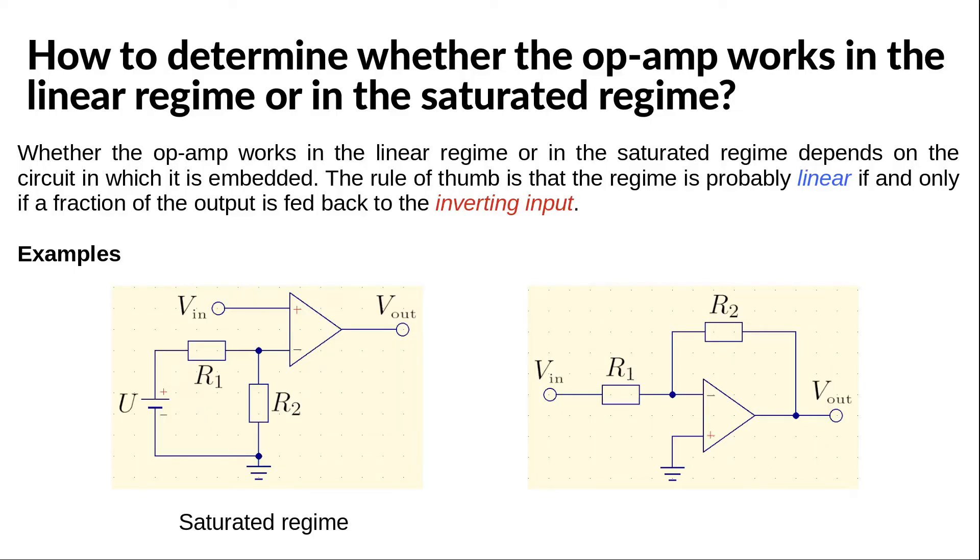In other words, because of the feedback, the op-amp does whatever is needed in order to bring the two input voltages to the same values, for which the regime is linear.